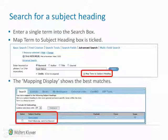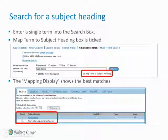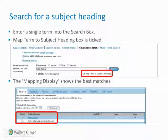Searching for a subject heading in the advanced search mode: enter the first of your terms or concepts into the search box, for example, heart failure. Notice that the map term to subject heading box is ticked, meaning you are going to check if the term exists as a subject heading in the database thesaurus. Click on search to continue. The mapping display shows the best matches for your term. If your term is selected, you can continue to the next step.